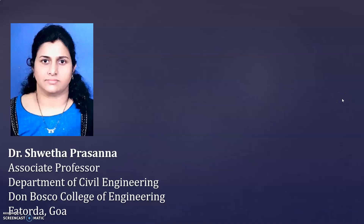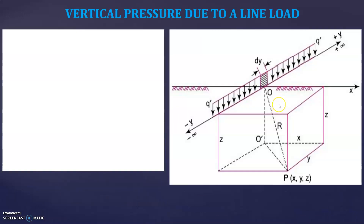Hello, dear students. Last class I explained how to find vertical stress under concentrated load using the Boussinesq equation, and also explained how to draw pressure distribution diagrams for isobar, vertical stress under horizontal plane and vertical plane. Today let us discuss some more cases: vertical stress under a line load, strip load, rectangular loaded area, and circular loaded area.